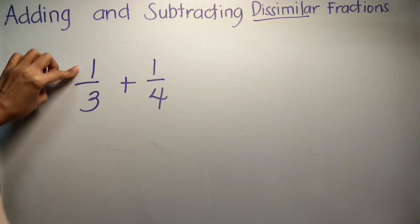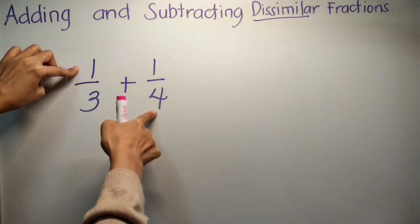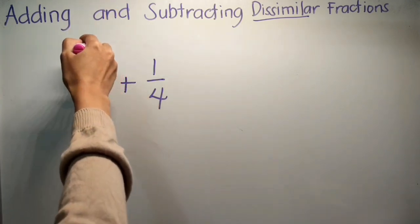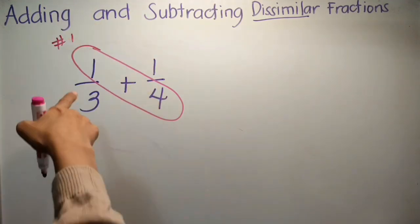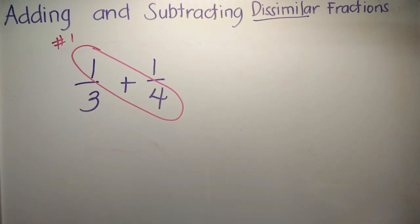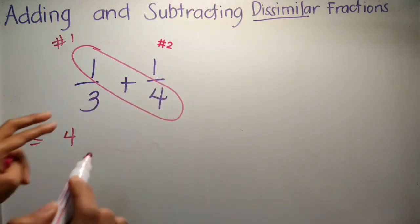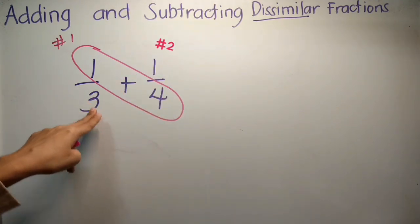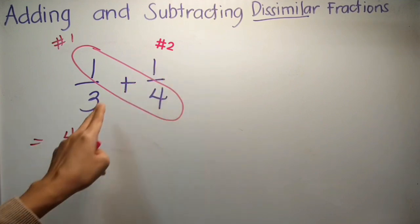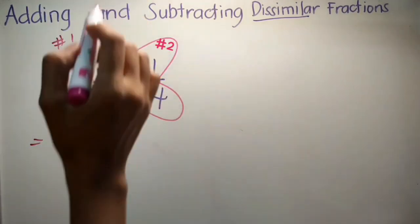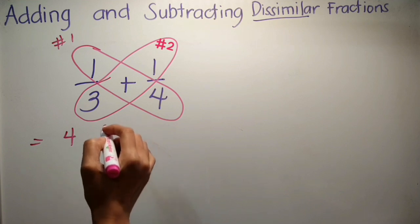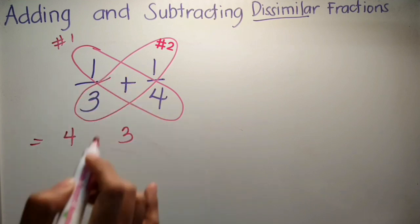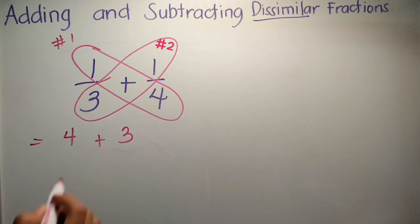Step 1, i-multiply mo ang numerator ng unang fraction — ito yung ating unang fraction — doon sa denominator ng pangalawang fraction. Step 2, i-multiply mo ang denominator ng unang fraction mo dito sa numerator ng iyong pangalawang fraction. Mukha na siyang butterfly. So 3 times 1 equals 3.